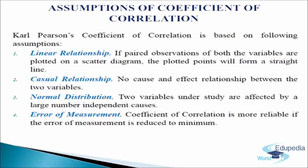Next, normal distribution: the two variables under study are affected by a large number of independent causes of such a nature as to produce normal distribution. Variables such as height, weight, color of skin, commodity prices, demand, supply, etc. are affected by a multiplicity of forces. And the last assumption is error of measurement: the coefficient of correlation is more reliable if the error of measurement is reduced to the minimum. These are the assumptions of coefficient of correlation.